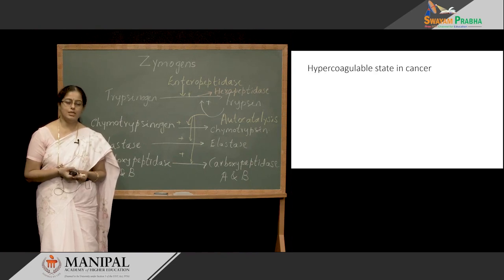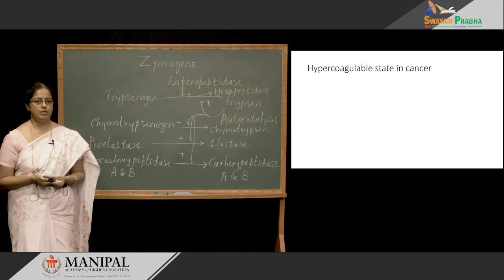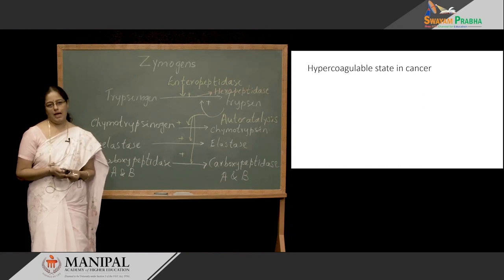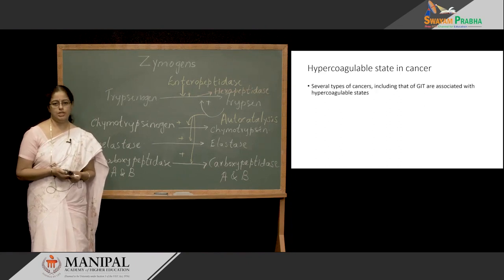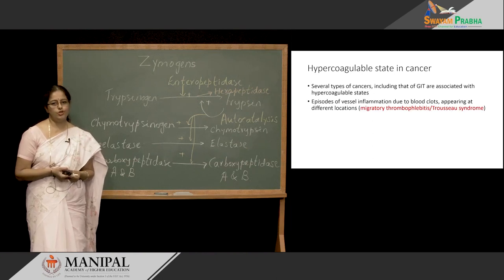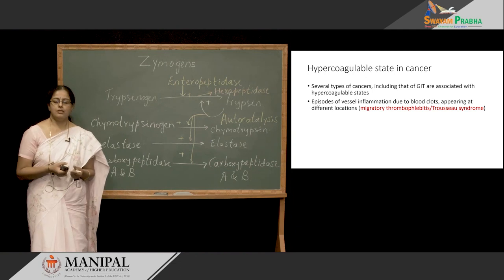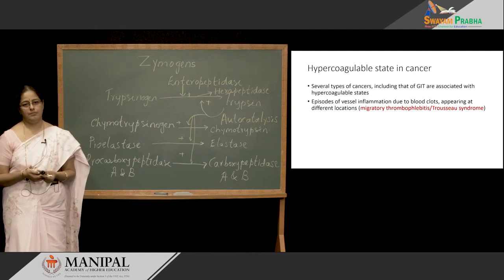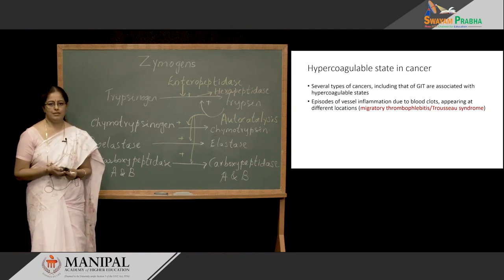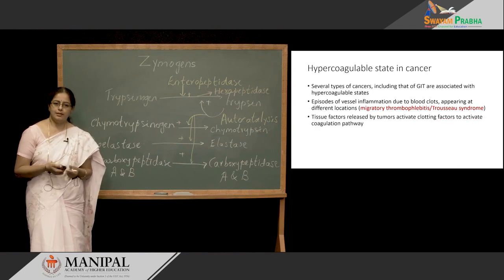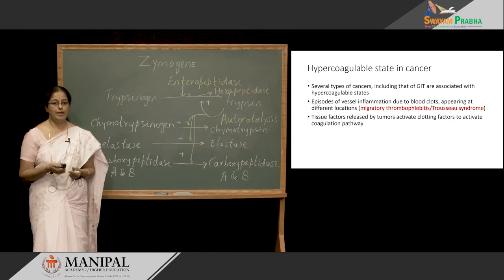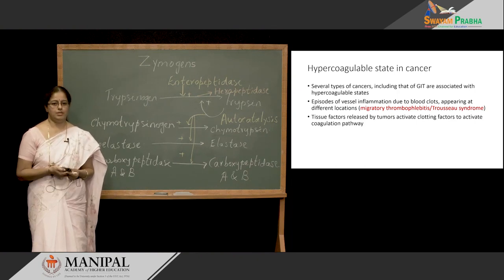One more condition is associated with premature activation of Zymogens. Many types of cancer are associated with a hypercoagulable state, also called migratory thrombophlebitis or Trousseau syndrome. What happens here is there is clot formation in the superficial vessels, and these clots appear at different places at different times. The cancerous tissues are able to release certain tissue factors which activate the extrinsic pathway of blood coagulation, thereby causing clot formation.